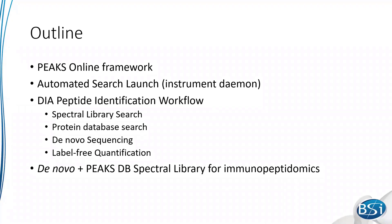So what I'm going to be going over today is giving you an outline of Peaks Online and what it is and how it's different from Peaks Studio. I'll be taking you through our automated search option, which gives you the ability to launch searches directly from your instrument using the instrument daemon. Then I'll cover DIA features such as spectral library search, protein identification using our direct database search, de novo sequencing, label-free quantification, and new algorithms related to that. At the end, I'll talk about using DIA data for immunopeptidomics with a new feature that allows you to build a spectral library using database search results as well as de novo only data.